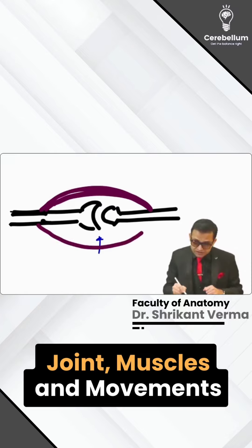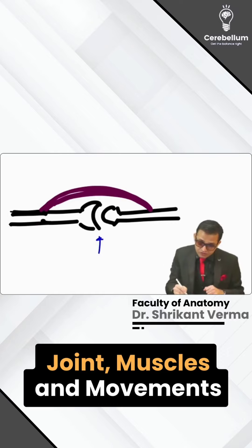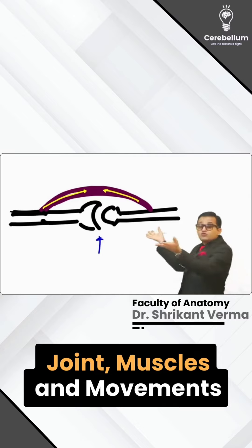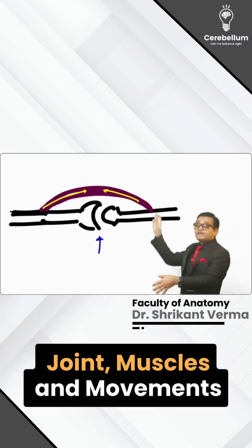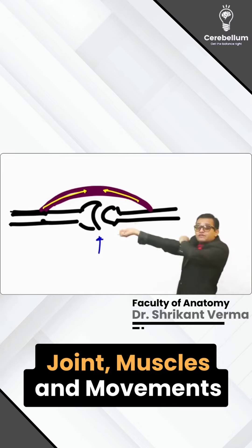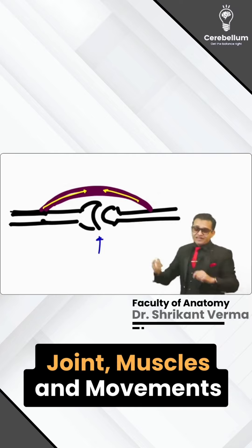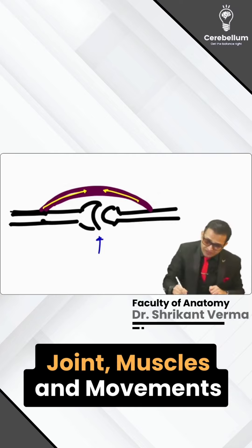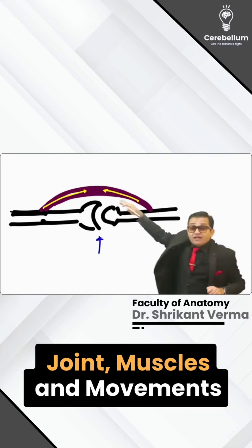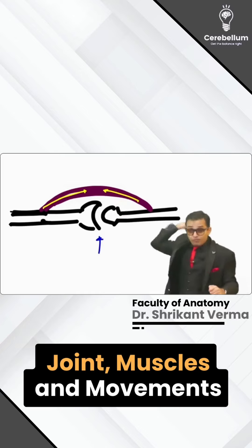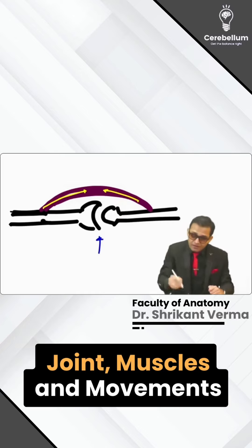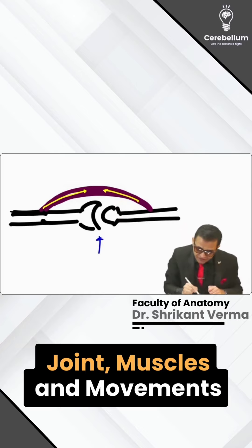The concept is: muscles are taking origin and inserting at the bone. So if this muscle contracts, these bones will move — definitely, muscles are above, so it will contract and pull the bones upside. Decrease in angle means flexion. So remember: upper muscles cause upward movement.